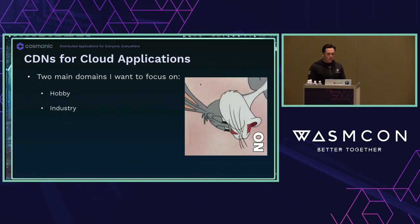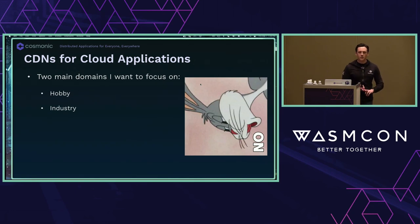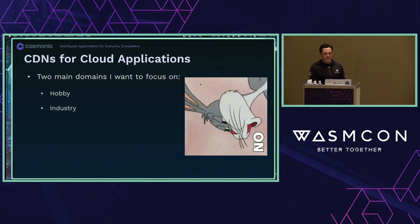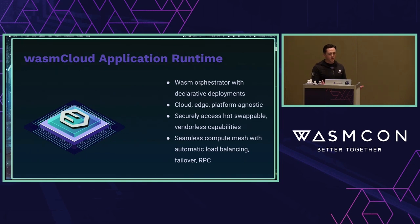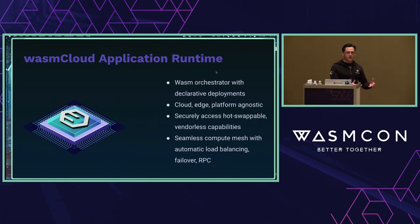I have two demos. One is more of a hobby — a singular application, not very distributed, that I want to spread around. The other is a more real-world industry example with hard requirements. I want to deploy it like CDNs deploy static assets — all over the place, to as many places as possible — and I'm going to do it using WasmCloud. WasmCloud is an application runtime in the CNCF — a sandbox project working toward incubation. It's a WebAssembly orchestrator with declarative deployments, a single binary, completely cloud, edge, and platform agnostic. You don't need to run it in a container or Kubernetes, but you can.